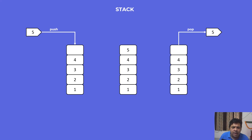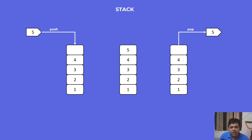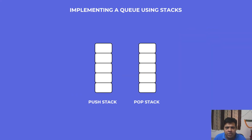This is where the contradiction starts when we talk about implementing a queue using stacks, because both of these data structures are pretty different from each other in this regard. We will look at the implementation in the next section.